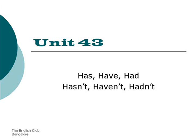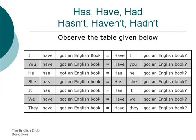Unit 43: have, has, haven't, hasn't, hadn't. Observe the table given below and compare the sentences. I've got an English book. Have I got an English book? You have got an English book. Have you got an English book? He has got an English book. Has he got an English book? She has got an English book. Has she got an English book? It has got an English book. Has it got an English book? We have got an English book. Have we got an English book? They have got an English book. Have they got an English book?